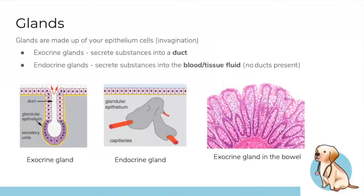Glands are epithelium-derived structures whose main job is to excrete substances. They split into two: exocrine glands secrete into a duct (e.g., sweat, oils, GI secretions), and endocrine glands secrete directly into blood or tissue (mainly hormones). An example of exocrine glands in the bowel shows goblet cells — the white structures — which secrete mucus.